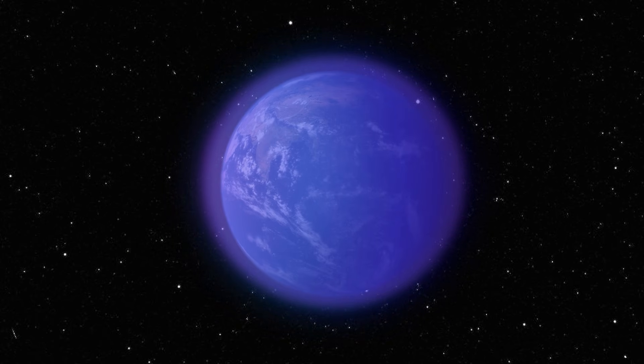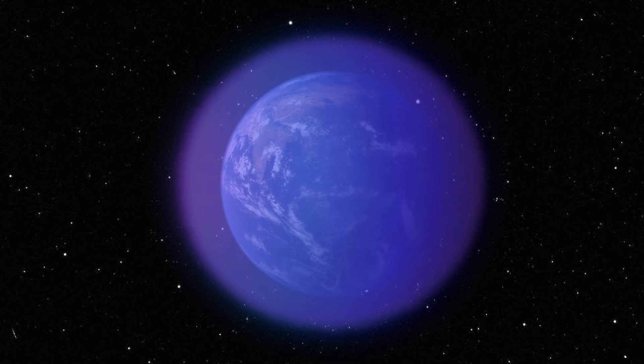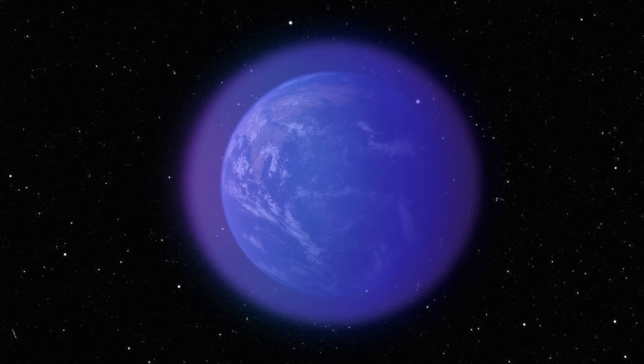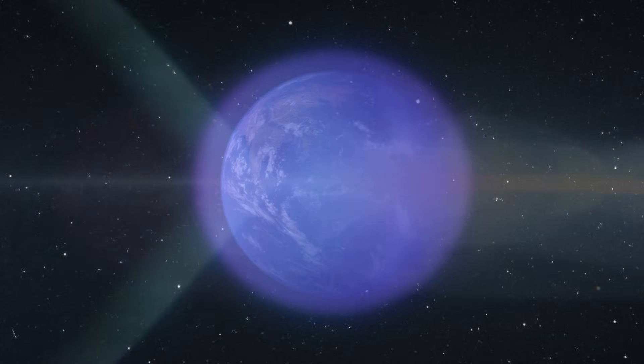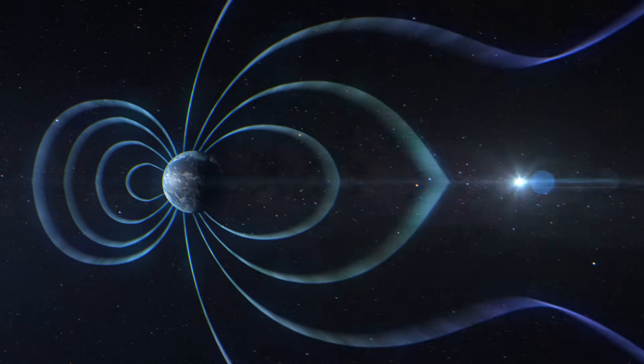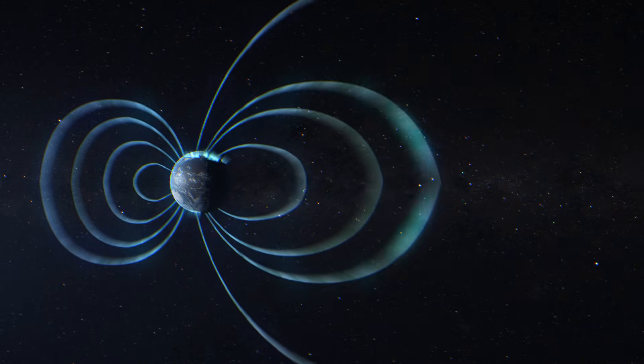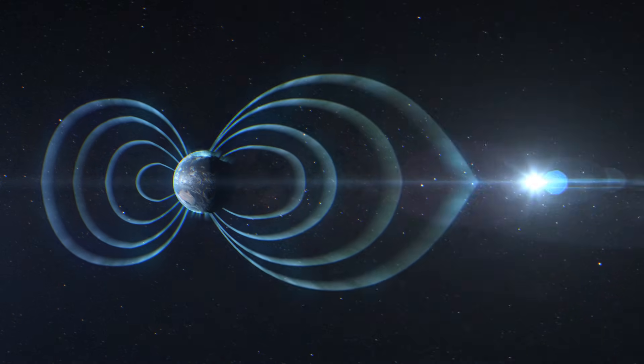As ejections from the sun press on the outer edge of the magnetosphere, field lines are warped, pressing or expanding on the ionosphere and other deeper atmospheric layers. The ever-changing nature of the magnetosphere drives the electric currents of the ionosphere, which influences weather.